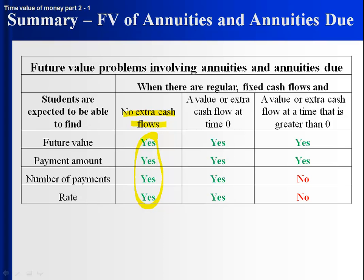If there is a value — which really means an amount already saved, or some extra cash flow at time zero — students should be able to do all four of those items. When you have an initial value or an extra contribution at time zero, the length of time between when that initial amount is and when we want the future value is n periods. Our annuity or annuity due also has n payments, so it can be done in one step.